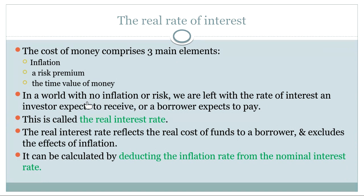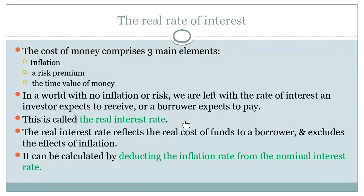To take it down to its bare bones: if we had a world where there was no inflation and no risk — what I call the naked interest rate — we are left with the rate of interest that an investor would expect to receive, or a borrower would expect to pay. That's purely his compensation for allowing you to use his money — it's the price of the money, his income. He's charging you rental for using his money. That is called the real interest rate, the real cost of money. The real interest rate reflects the real cost of funds to a borrower, and it excludes the effects of inflation.